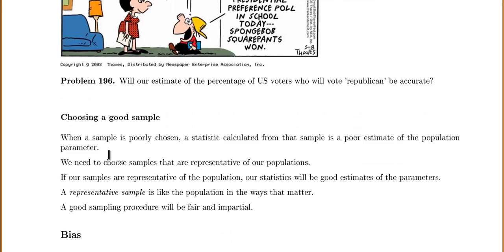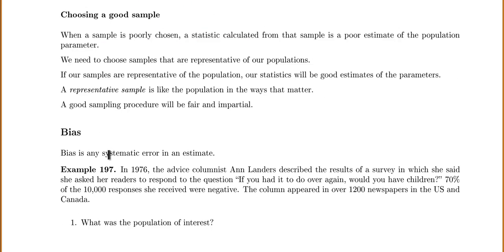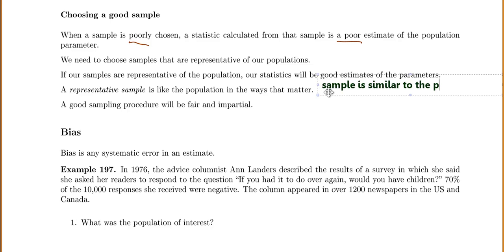How can you choose a good sample? When a sample is poorly chosen, a statistic calculated from that sample is a poor estimate of the population parameter. We need to make sure we choose samples that are representative of our populations. If our samples are representative, then our statistics will be good estimates of our parameters. A representative sample is like the population in ways that matter — the sample is similar to the population. A good sampling procedure will be fair and impartial.